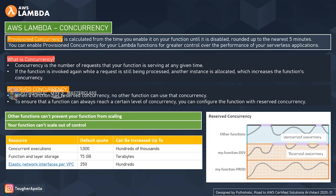Concurrency is the number of requests your function is serving at any given time. To ensure a function can always reach a certain level of concurrency, you configure it with reserved concurrency. With reserved concurrency, other functions can't prevent your function from scaling, and your function can't scale out of control because it has a concurrency limit.